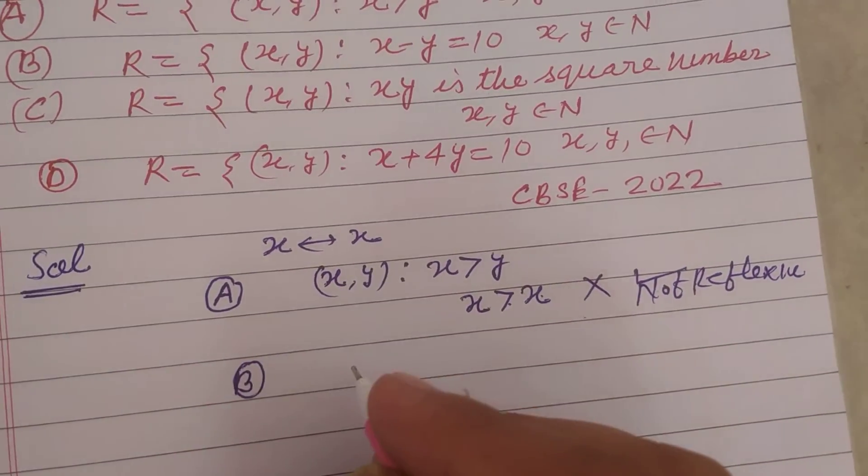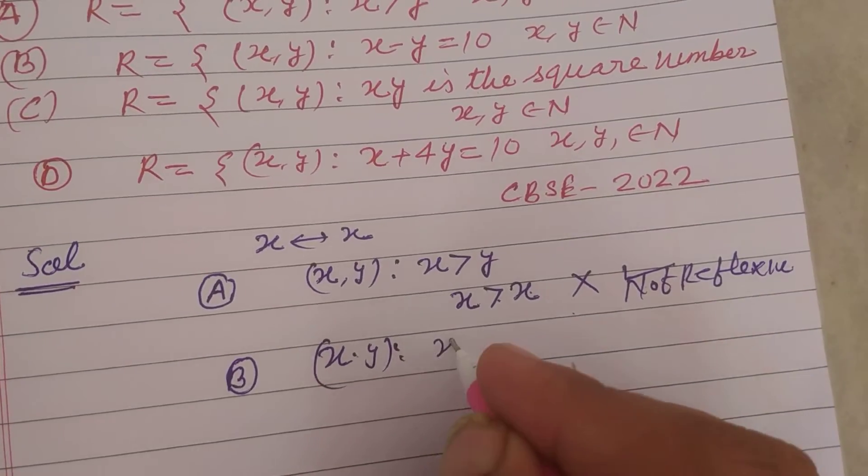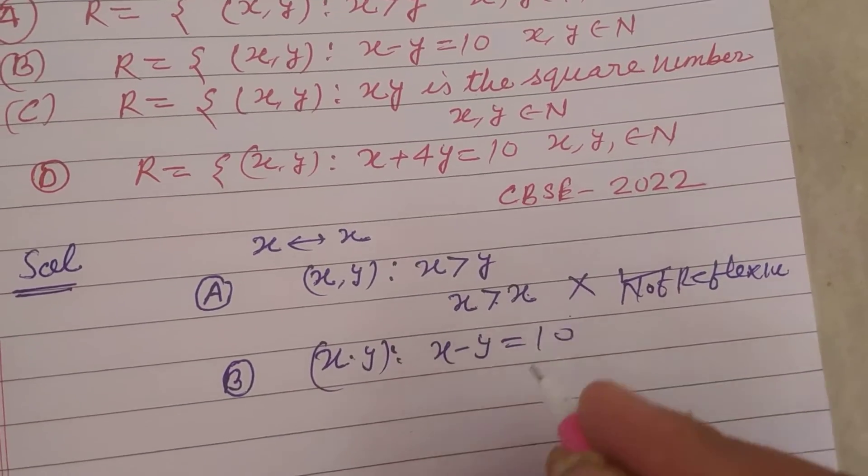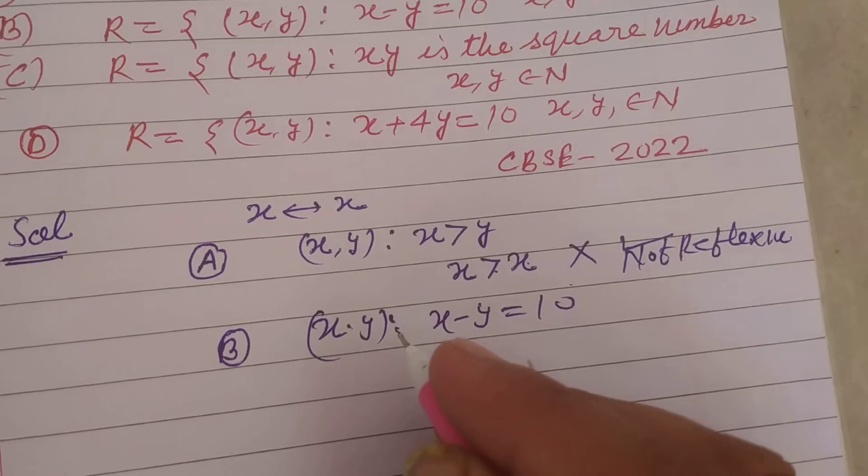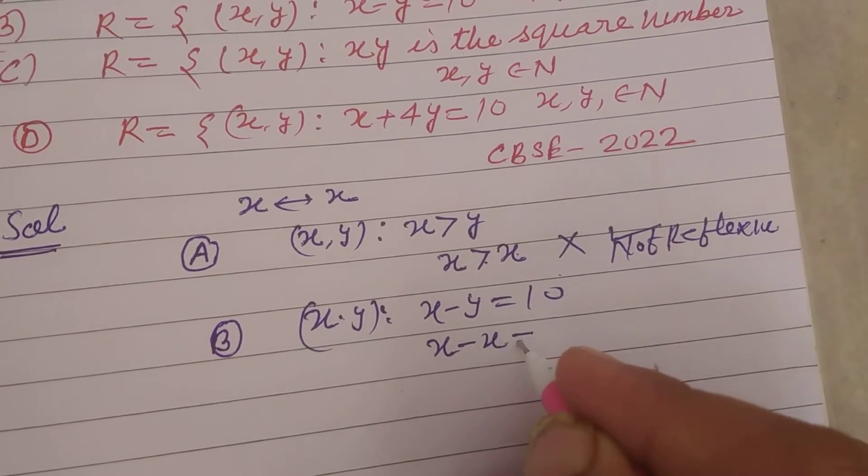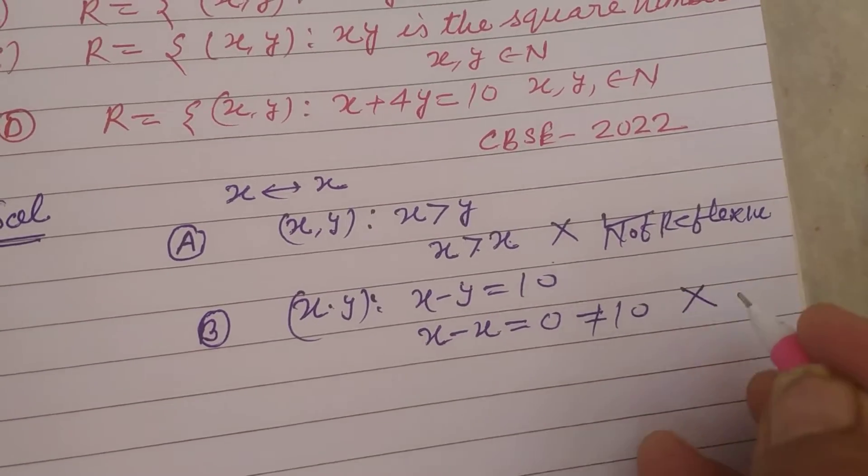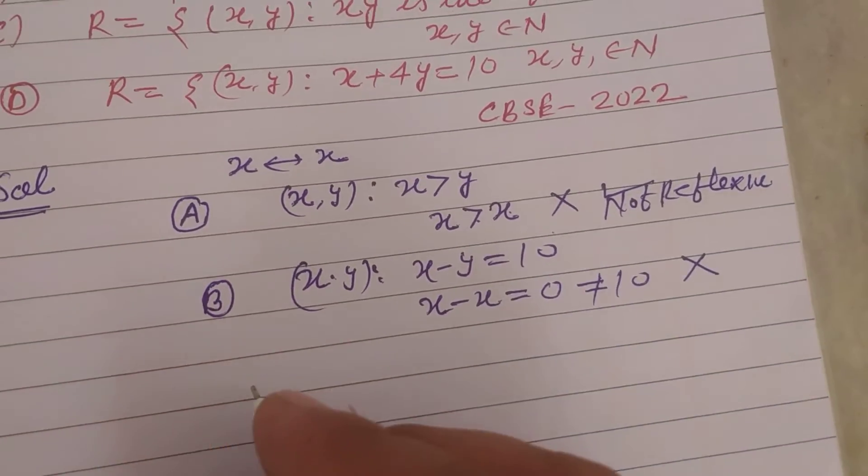In second, (x, y) is a relation such that x minus y equals 10. When we put x to x, so x minus x equals 0, which is not equal to 10. So this is also not a reflexive relation. And see...